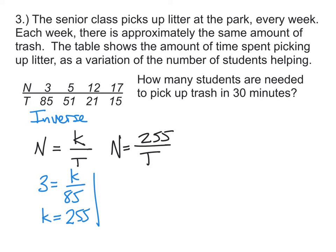That means that our function is really n equals 255 divided by t. Now, in order to determine how many students we need to pick up trash in 30 minutes, I'm just going to plug in 30 for t. And 255 divided by 30 is 8.5. So we would need 8.5 people. Well, that doesn't really make sense. We should probably round it up to 9 people.